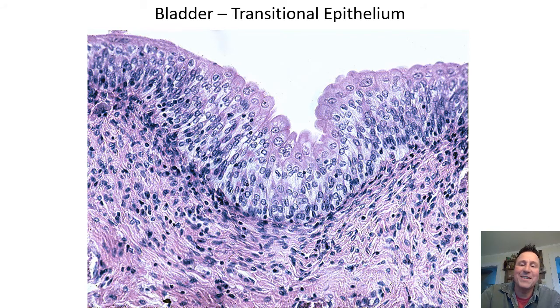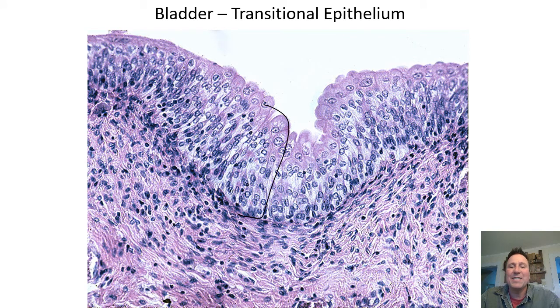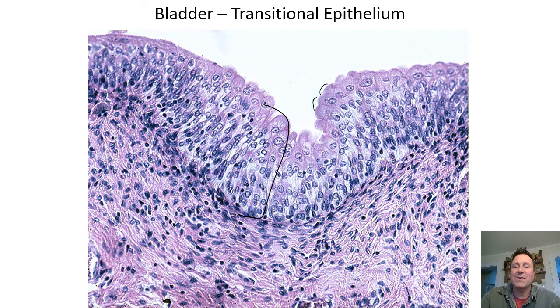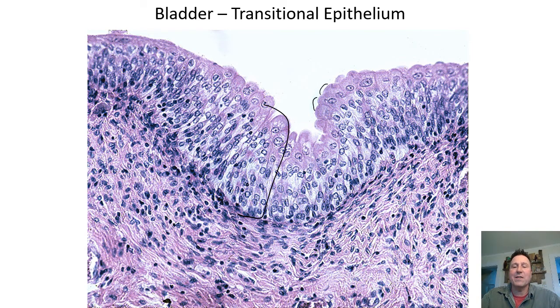Here's transitional epithelium — you can see the rounded tops. The cells are kind of roundish and they'll slide by each other.